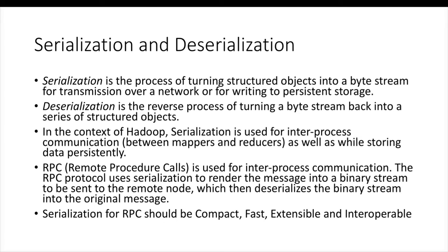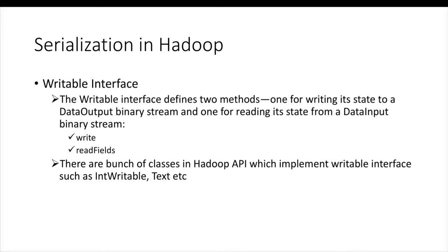Extensible means if you don't have the necessary functionality, you should be able to build on top of existing functionality. It should be fast so that the byte stream is transferred fast, and to make it fast it has to be compact. Not only the transfer process but also the serialization and deserialization process has to be very fast. So for RPC purpose, the serialization has to be compact, fast, extensible, and interoperable, and those are the things kept in mind while implementing serialization in Hadoop.